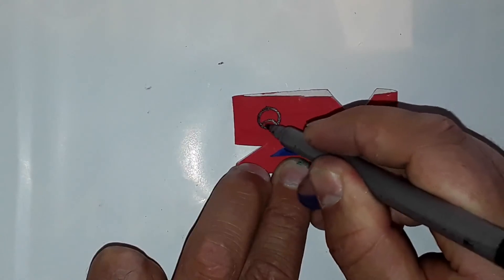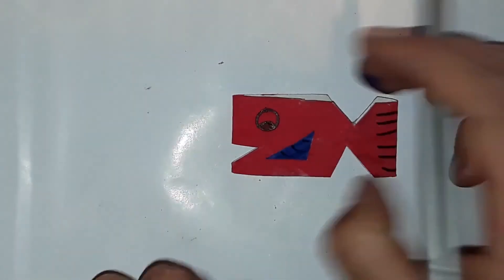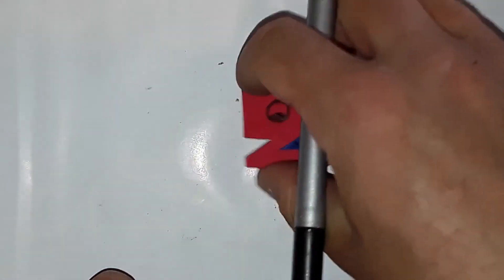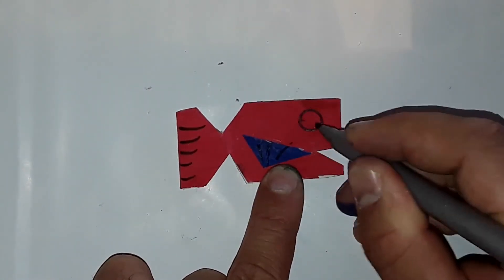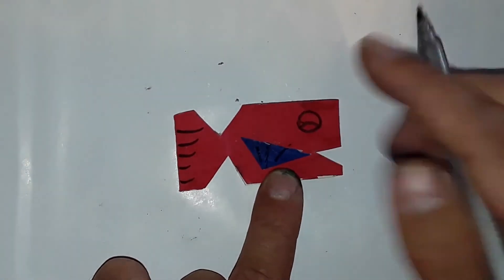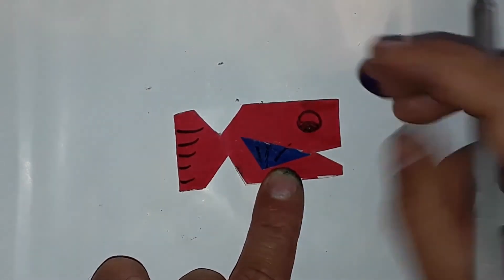You simply make a round circle at this spot. And do the same again on the other side.